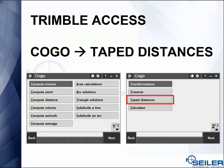Today we're going to talk about Trimble Access and a COGO command called taped distances. Taped distances can be found on page two of all the COGO commands.